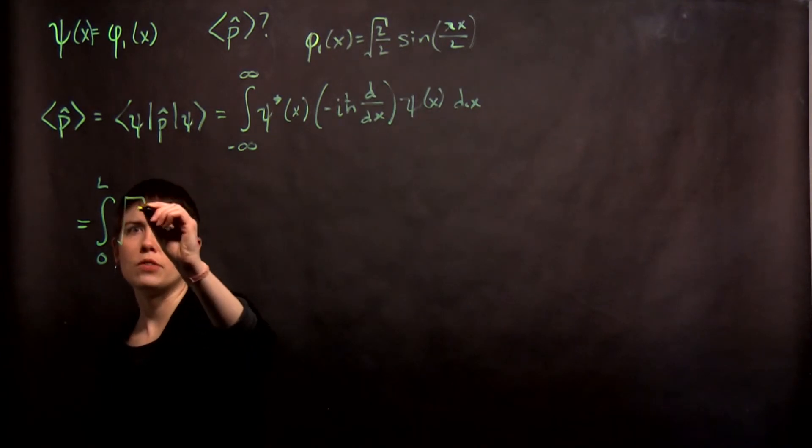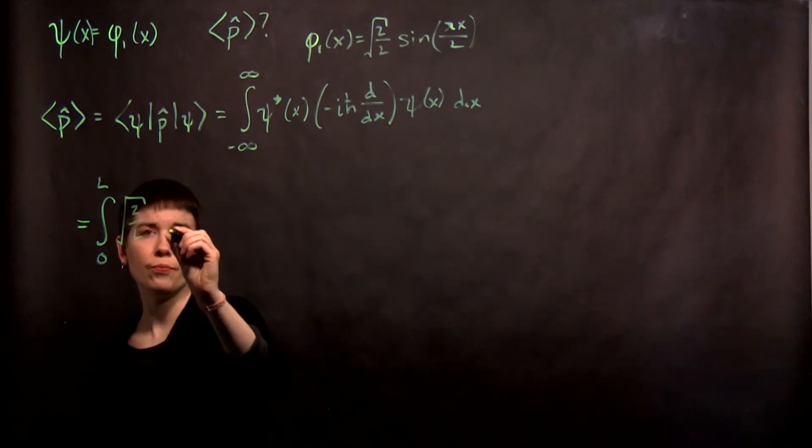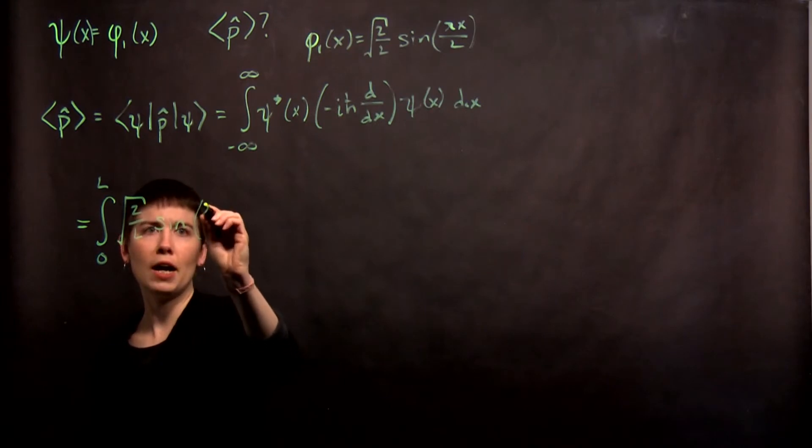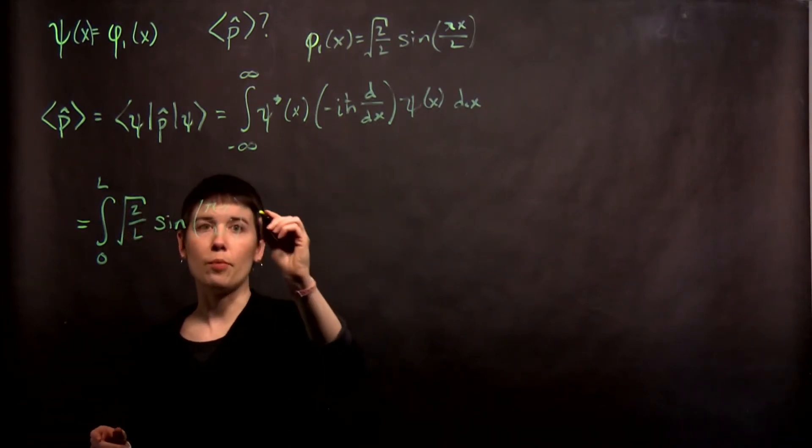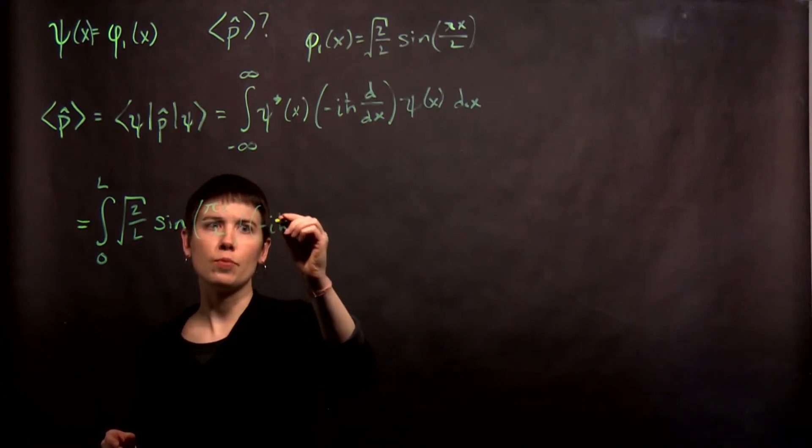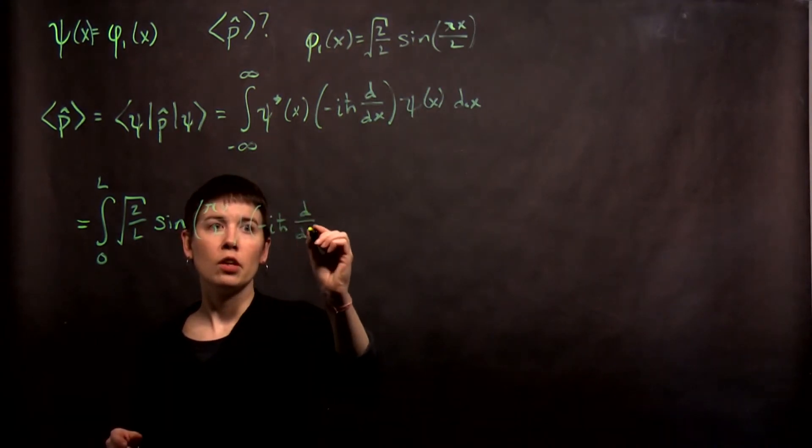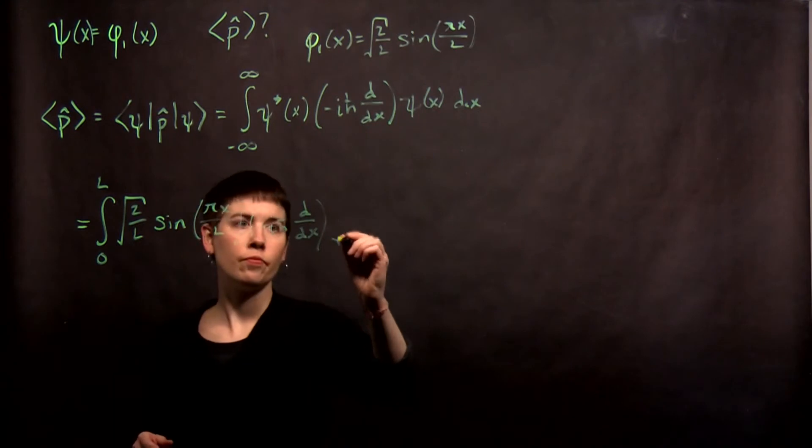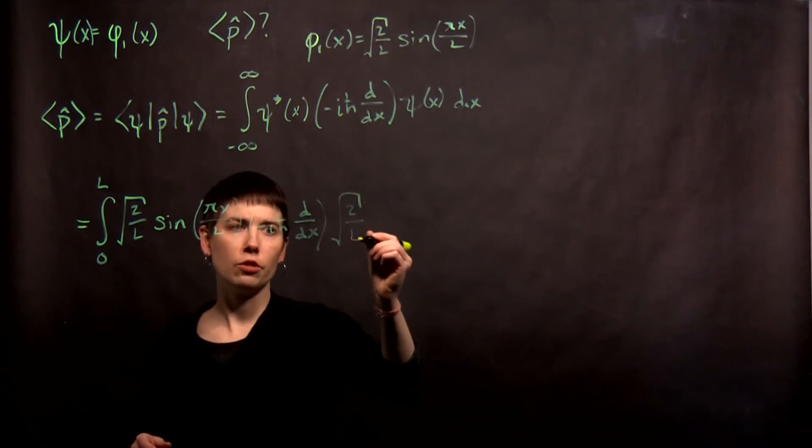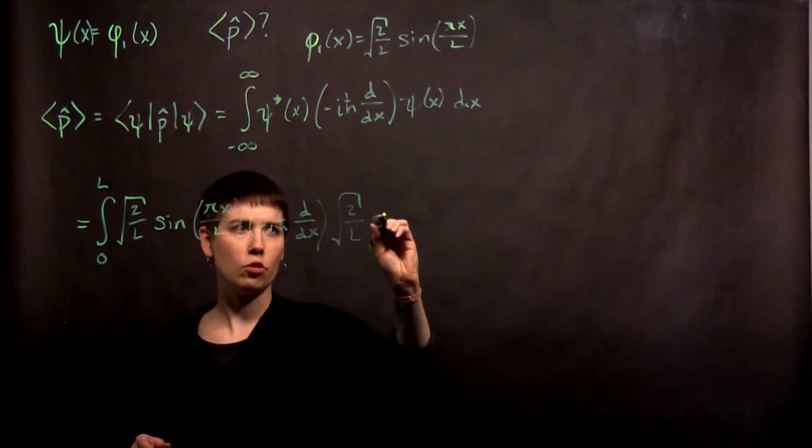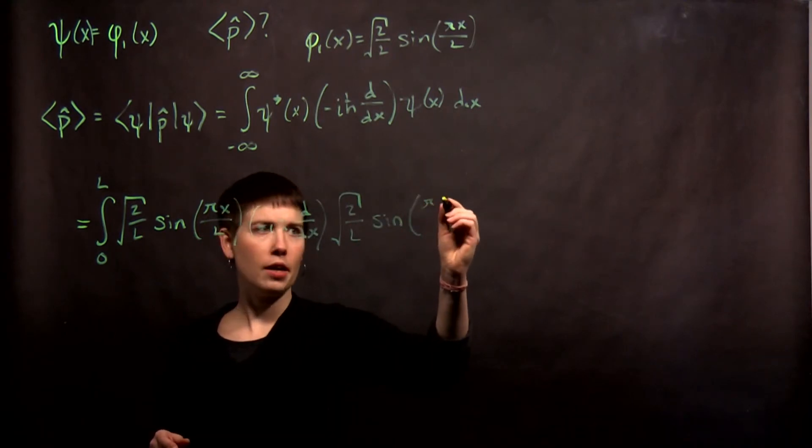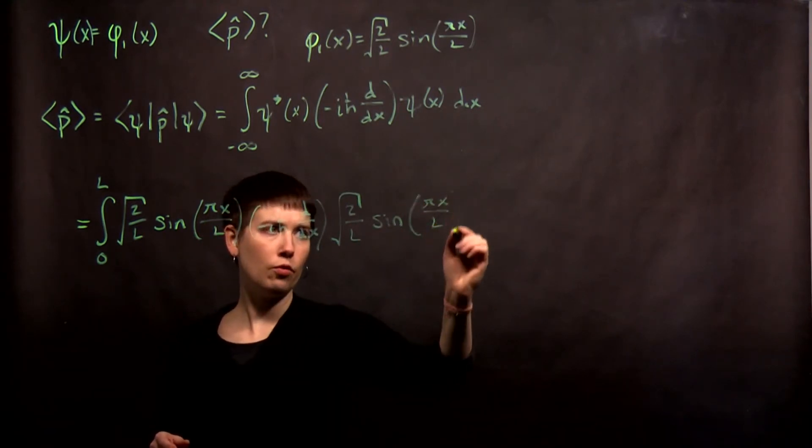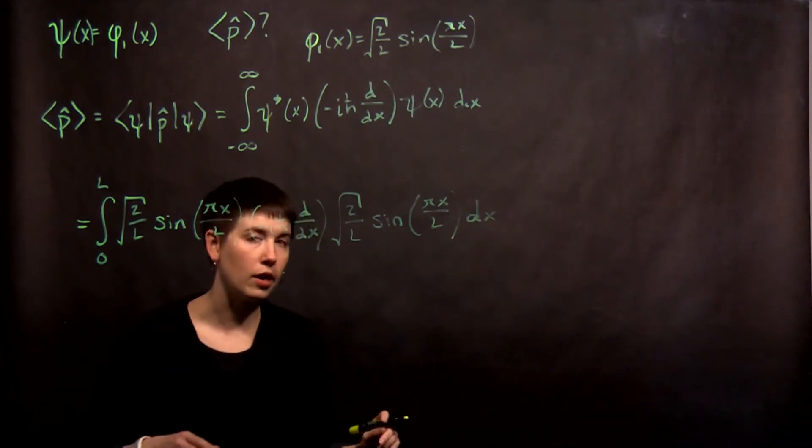So I'm going to say 2 over L, square root, sine of pi x over L. And now I have this operator, so negative i h bar d dx. And I'm going to write down my function again. Don't forget all those coefficients up front, which we need for normalization, or else nothing will make sense. So pi x over L dx.